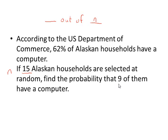Here we're looking for the probability that nine have a computer, so our value of x is exactly nine. Do we know the probability that a household has a computer? That is given here at 62%, and that's our value of p.